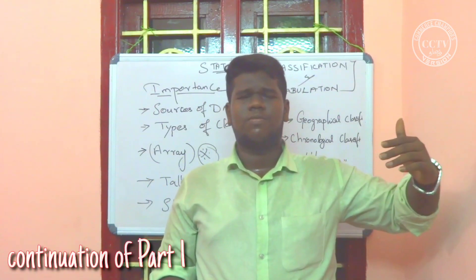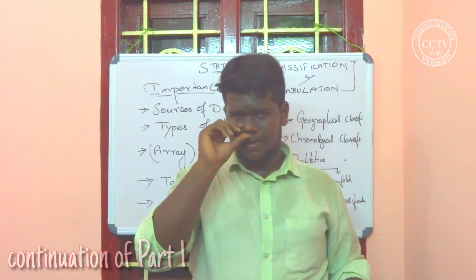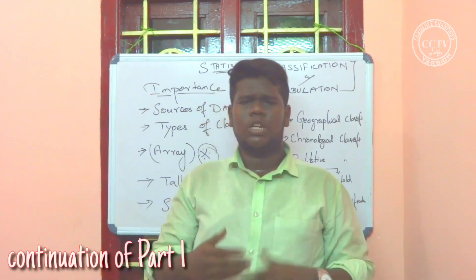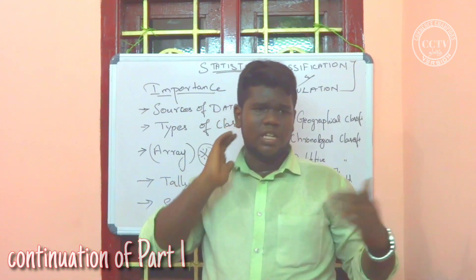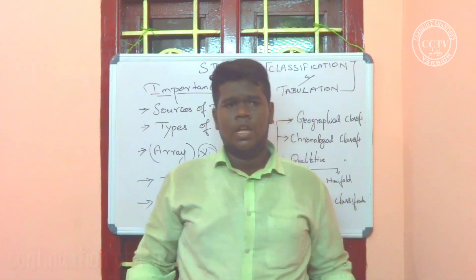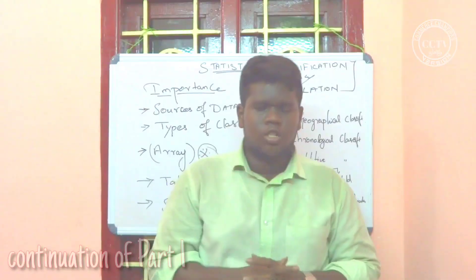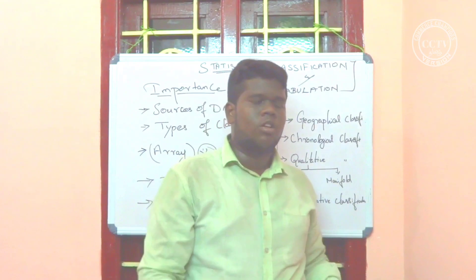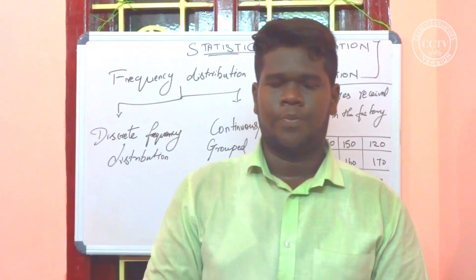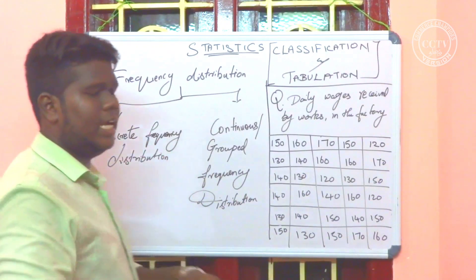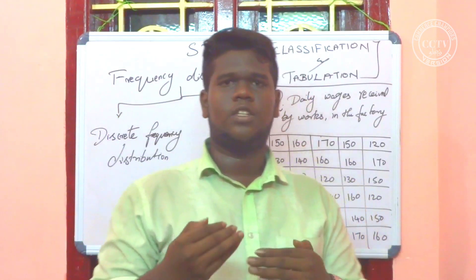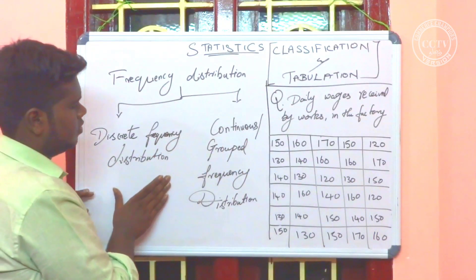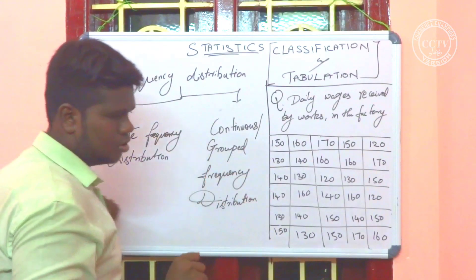You can write a number in lines. How do I arrange the number correctly? In these lines there are repetitions, so they convert the frequency using tally bars. The frequency distribution is represented by tally bars. The discrete frequency distribution is a group of frequency distribution.